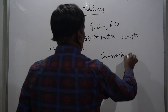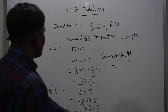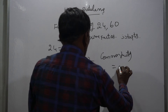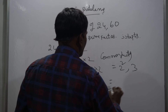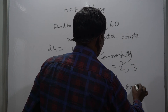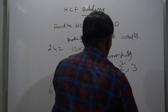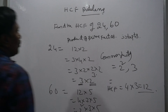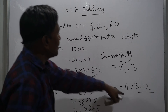The common factors are: 2 squared is present in both (2 cubed in 24, 2 squared in 60), and 3 is present in both. So multiply the common factors: 2 squared is 4, and 4 into 3 is 12. So the HCF of 24 and 60 is 12.